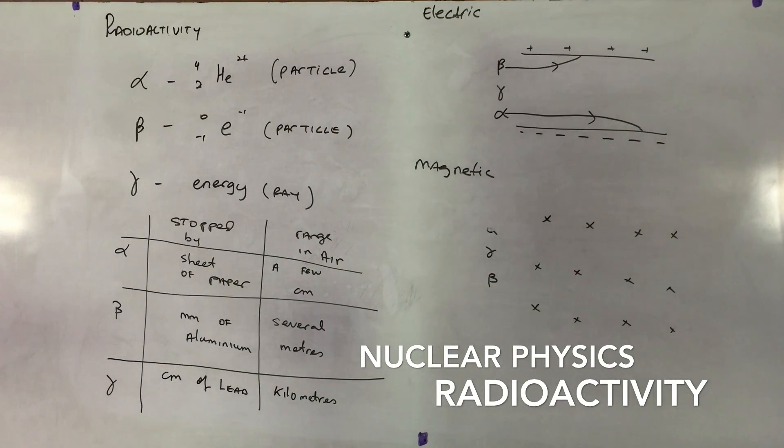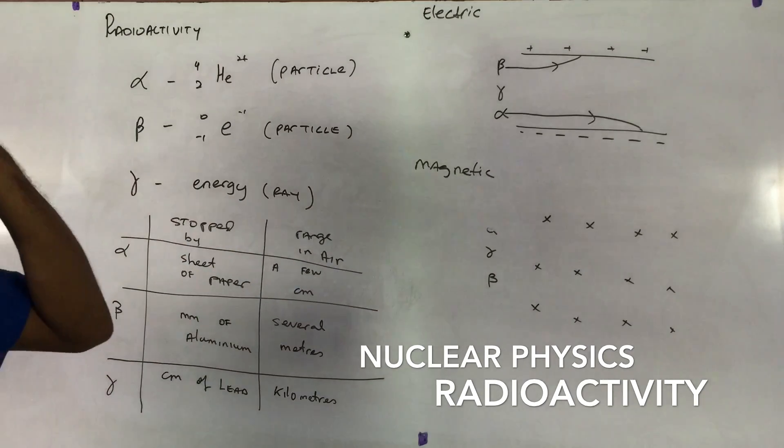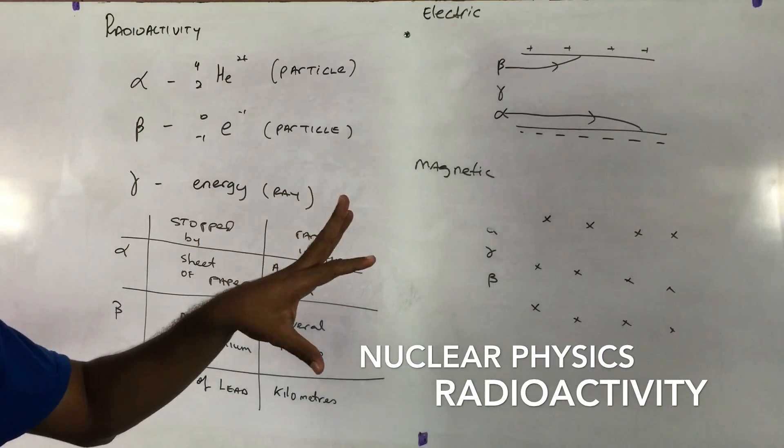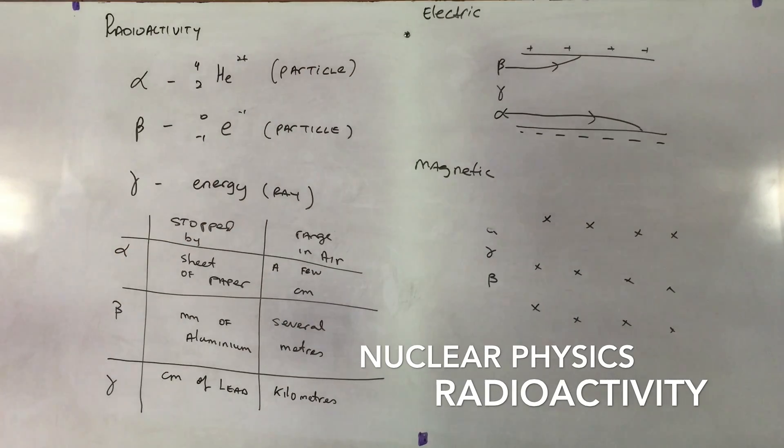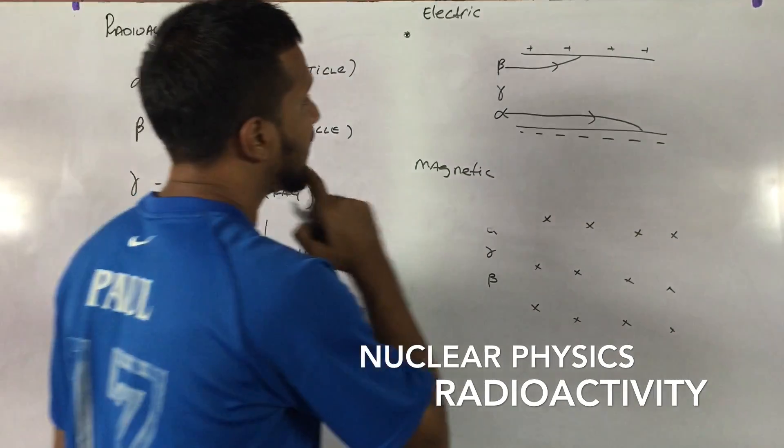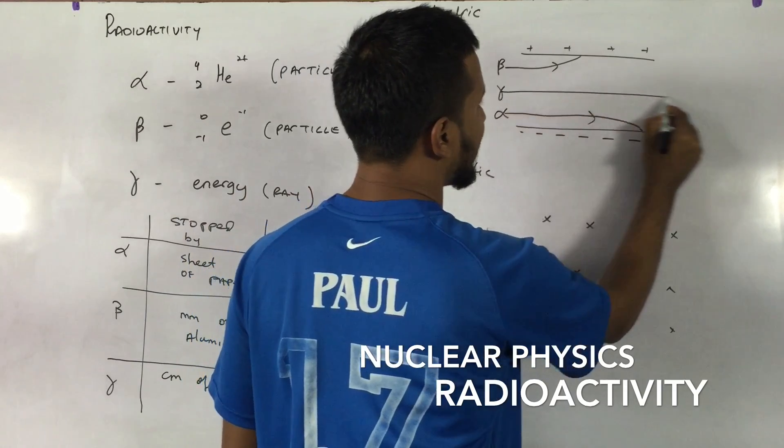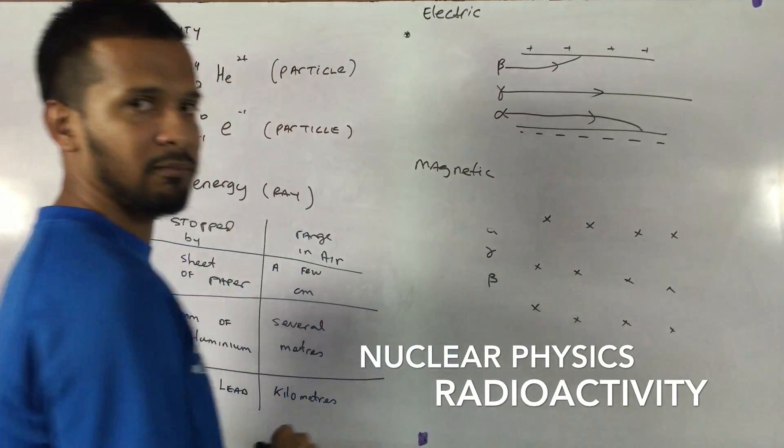What about gamma? Gamma has no charge. So if something that's not charged is traveling through an electric plate like that, what will happen? Well, nothing will happen. The gamma particle goes straight through. It's undeviated.